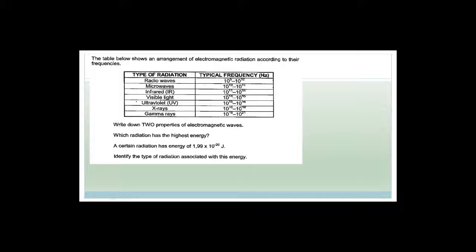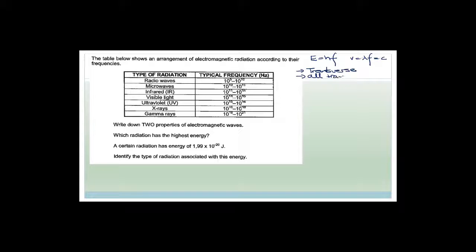A similar type of question — they've given us the typical frequencies of radio waves, microwaves, infrared, visible, UV, x-rays, and gamma rays. Remember E = hf and c = λf; those formulas are on your formula sheet. The question asks: write down two properties of electromagnetic waves. One: they are all transverse. Two: they all travel at the speed of light in a vacuum.